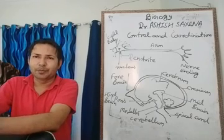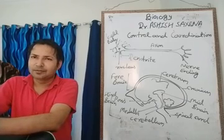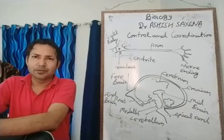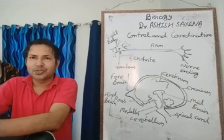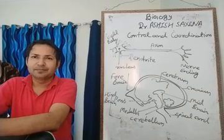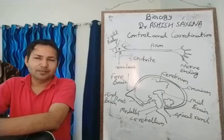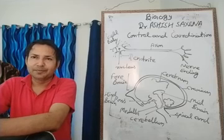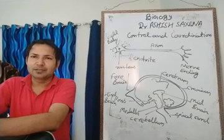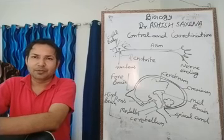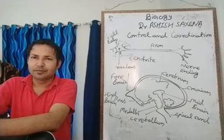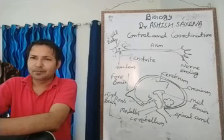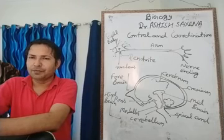You will study the human alimentary canal with its different parts: mouth, buccal cavity, pharynx, esophagus, stomach, and intestine. The intestine is of two types: small and large. There are different digestive glands that help the digestion process: salivary glands near the tongue, gastric glands in the stomach, pancreas, and liver. The liver is the largest gland in the human body.